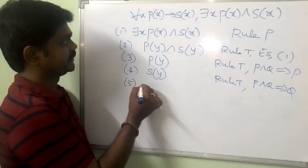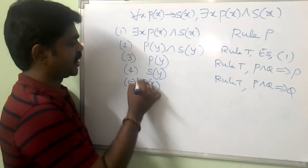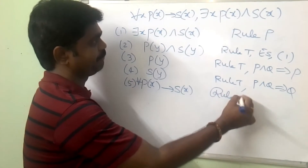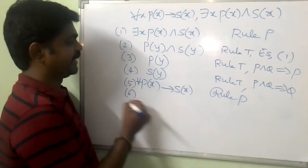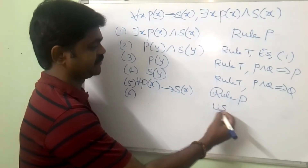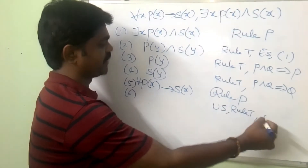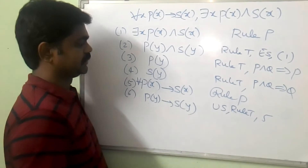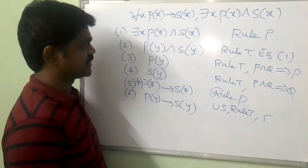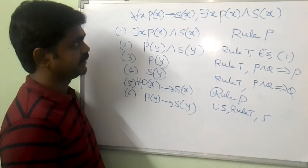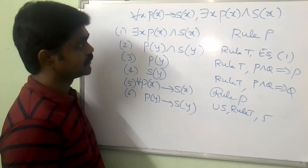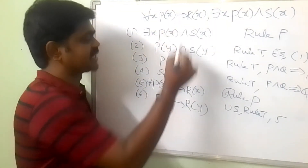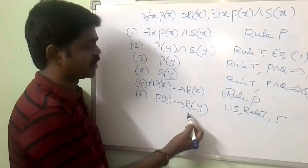Step 5: for all X, P of X implies R of X — this is already premise. I will apply universal specification, rule T on step 5. What do I get? P of Y implies R of Y.